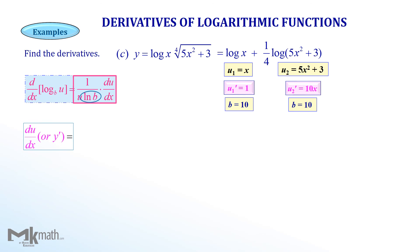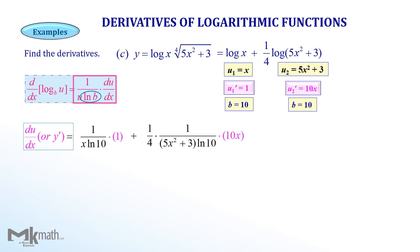For the first term, we have 1 over x, multiplying the denominator by ln of 10, times 1 as u'. For the second term, we have one-fourth times 1 over (5x squared plus 3), multiplying the denominator by ln of 10, times 10x as u'. Simplifying the second fraction gives the final answer as shown.